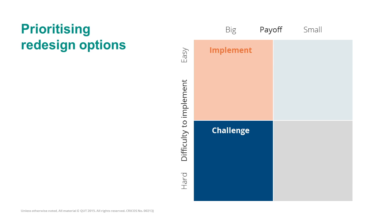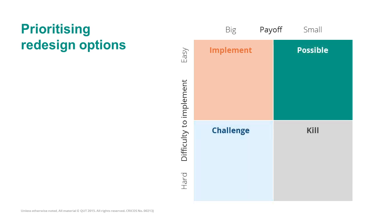On the other hand, there are redesign options that have a small payoff but are easy to implement. These are very feasible options we should consider, but because they have a small payoff they might receive less priority than those in the implement quadrant.